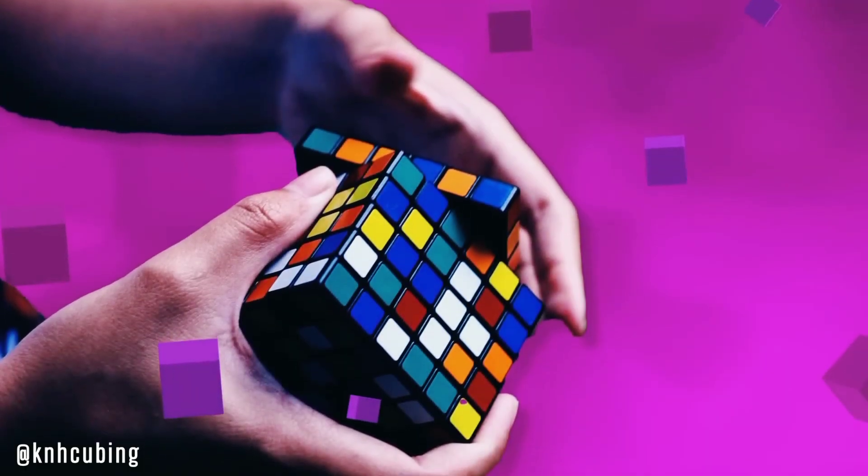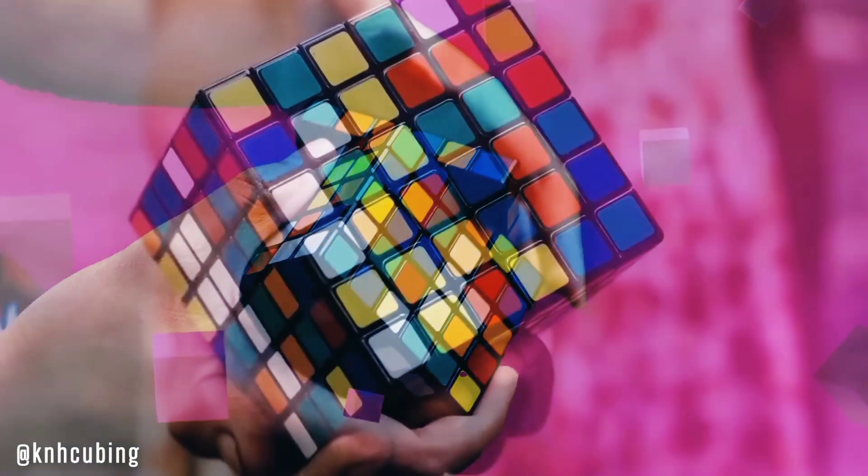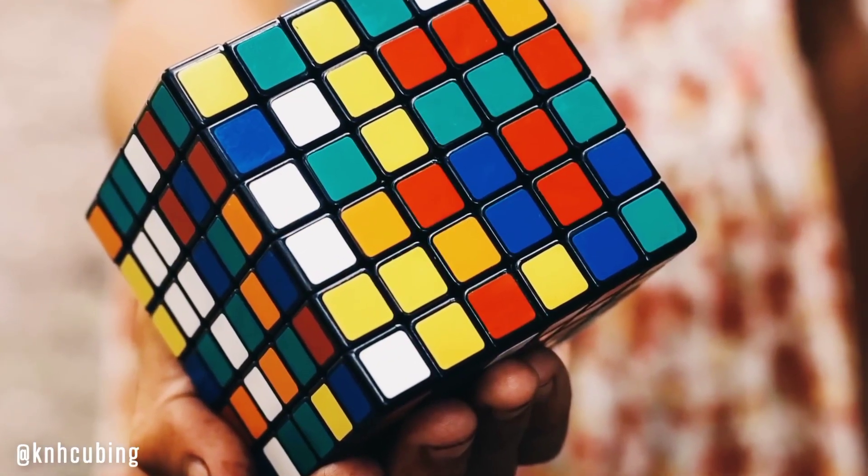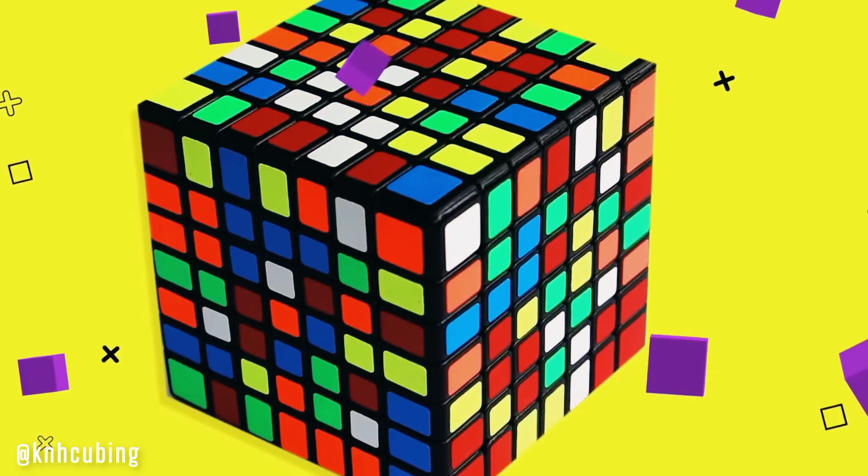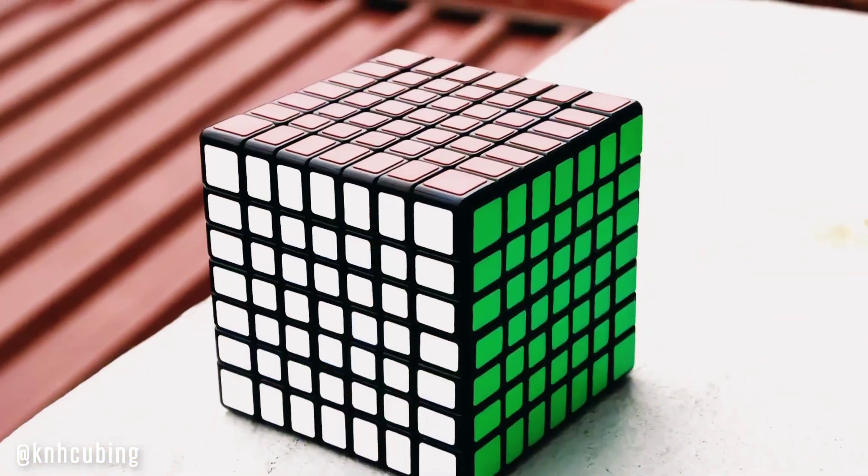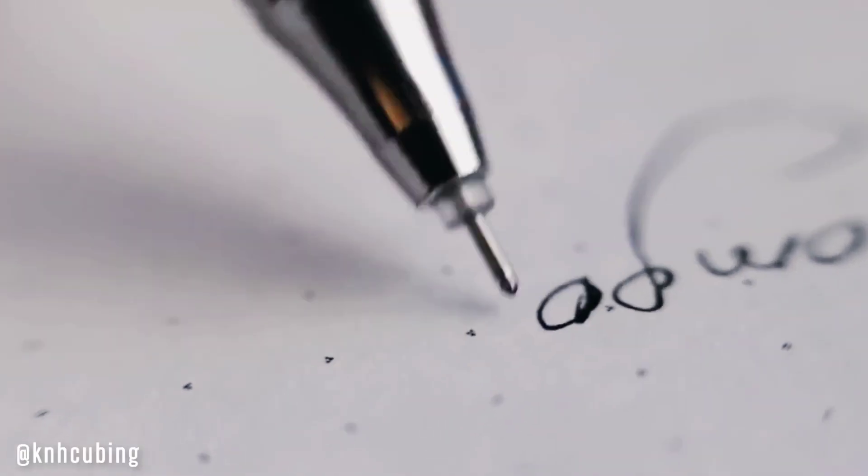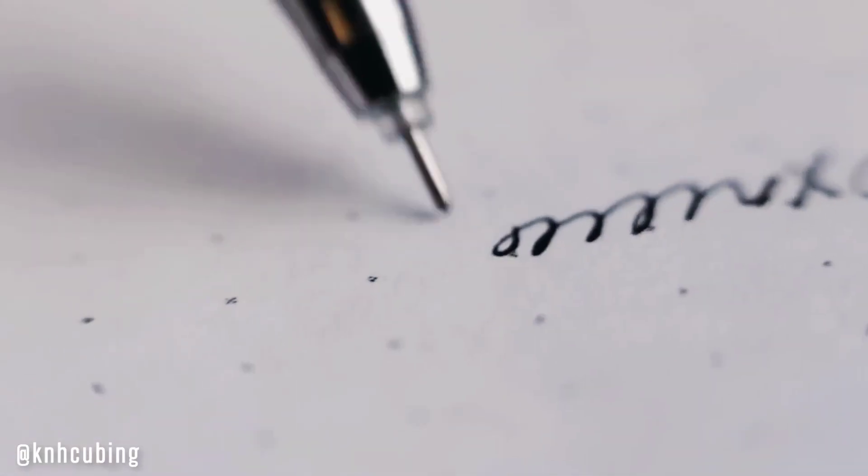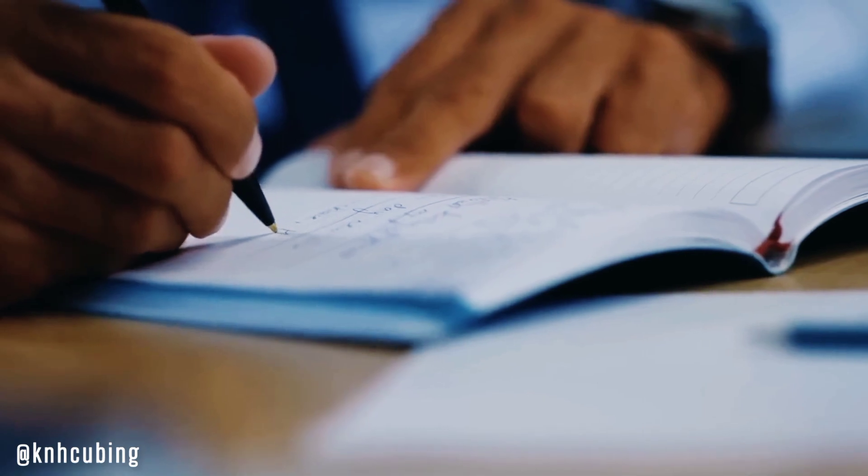The 6x6x6 cube is called V Cube 6 with a record of 1 minute and 9 seconds. The 7x7x7 is called a V Cube 7 with a record of 1 minute and 40 seconds. The record of all these variations are held by one person, an American speedcuber, Max Park.